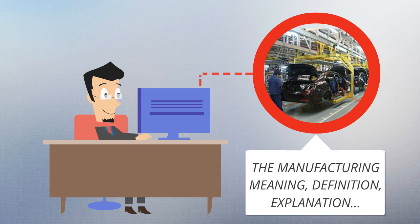In industrial production, raw materials are transformed into finished goods on a large scale. Such finished goods may be sold to other manufacturers for the production of other, more complex products.